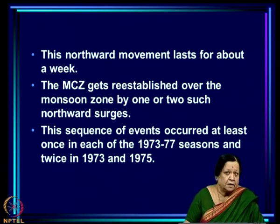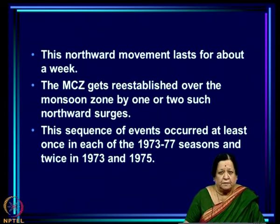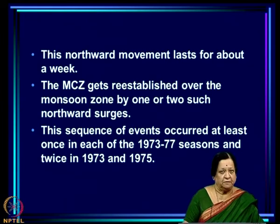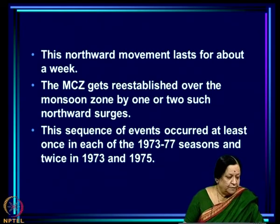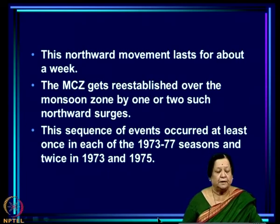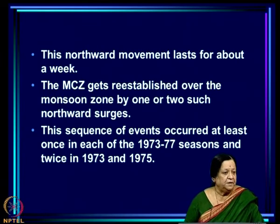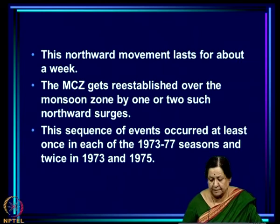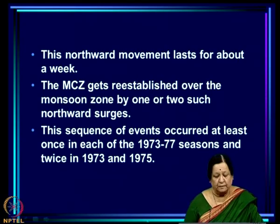This sequence of events — the continental TTCZ disappearing, a secondary band appearing, and the continental TTCZ reviving by northward movement of the secondary band — was noted by Sikha and Gagir to occur at least once in each of the 1973–77 seasons, and twice in 1973 and 1975.